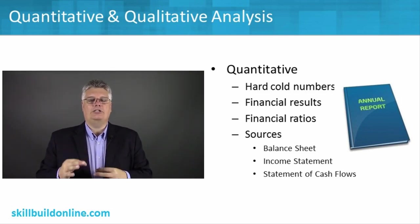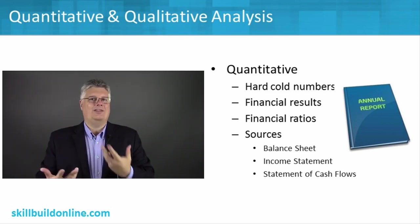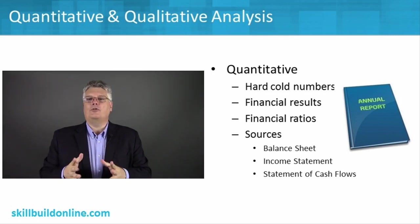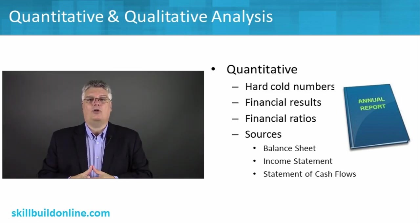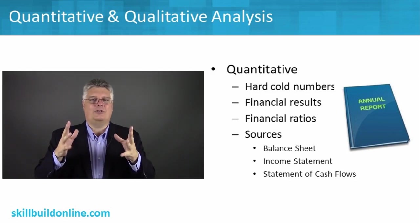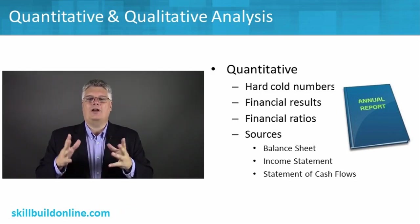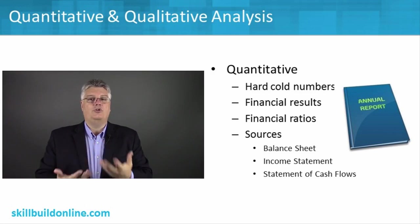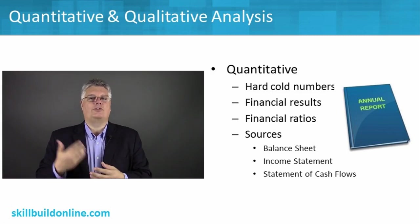So let's take a quick moment to look at these two things before we start getting into things like ratios and really in-depth ways to evaluate companies. First off, quantitative is the hard cold numbers — not opinion or anything like that. Here's what our sales numbers are, here's what our earnings numbers are, here's the stock price. These are all numerically-based things. That's the quantitative aspect, and you're looking at financial results, and from those you're using many well-established ratios to evaluate companies versus one another.